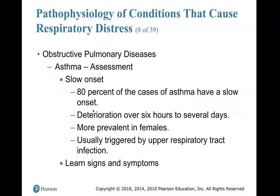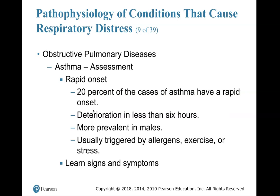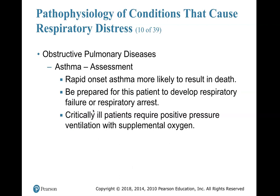To assess asthmatic patients — slow onset: 80% of cases of asthma have a slow onset, deterioration over six hours to several days, more prevalent in females, usually triggered by upper respiratory tract infection. Rapid onset: 20% of cases have a rapid onset, deterioration in less than six hours, more prevalent in males, usually triggered by allergens, exercise, or stress. Rapid-onset asthma is more likely to result in death — be prepared for this patient to develop respiratory failure or respiratory arrest. Critically ill patients require positive pressure ventilation with supplemental oxygen.